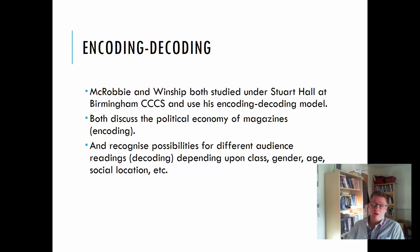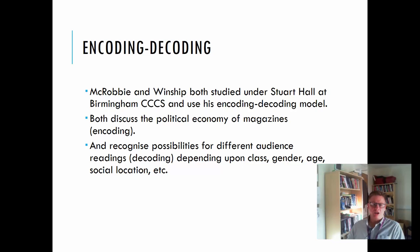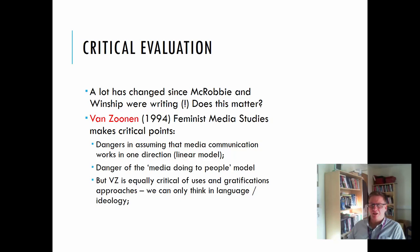McRobbie and Winship both studied under Stuart Hall, who was a Marxist working at the Centre for Contemporary Cultural Studies in Birmingham, and used his encoding-decoding model. Both discuss the political economy of magazines, looking at how power relationships result in certain representations being dominant. But they also recognise the possibilities for different audience readings and different forms of decoding, which depend upon class, gender, age, and social location. Underlying that, there is still a set of gender codes that young women are proposed to follow.